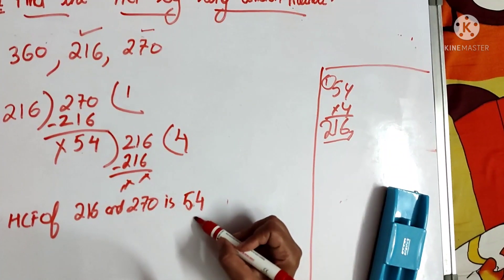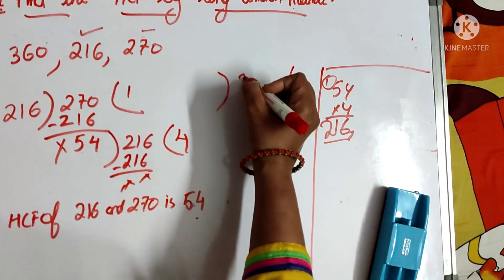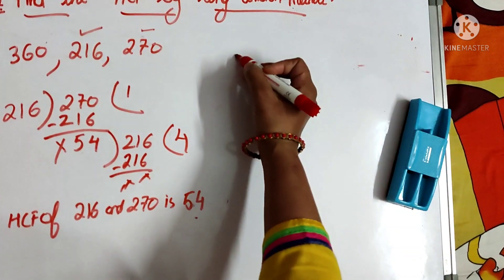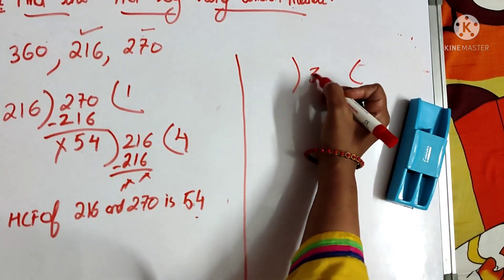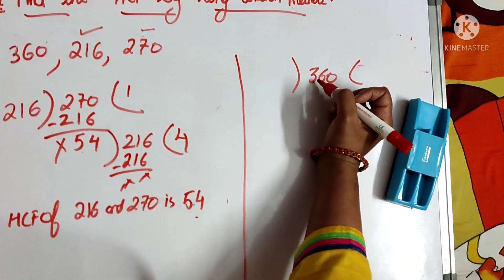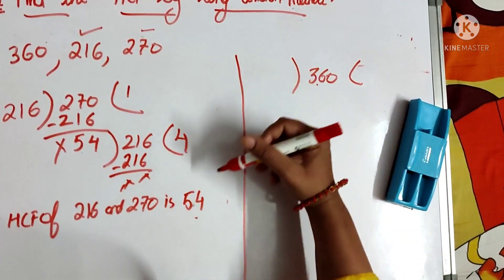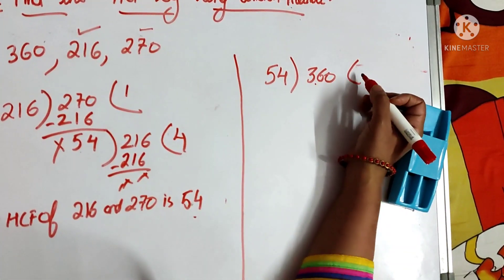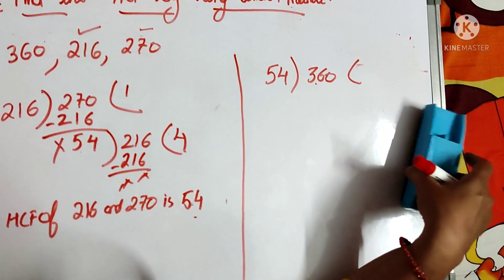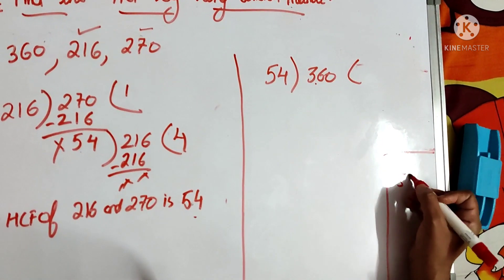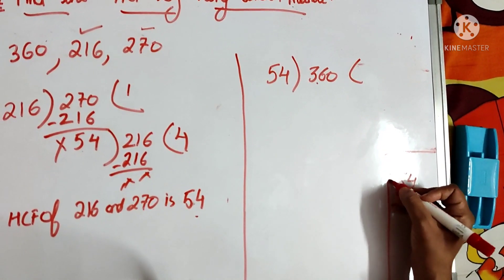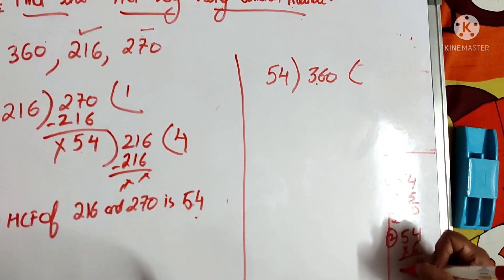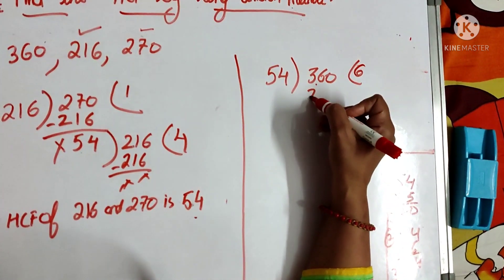Now we use this HCF, 54, as the divisor and divide 360 — the remaining number — by 54. 360 becomes the dividend and 54 becomes the divisor. 54 into 5 is 270, 54 into 6 is 324. Since 324 is less than 360, it goes by 6 giving 324. The remainder is 360 minus 324 = 36.